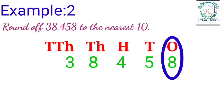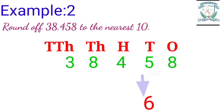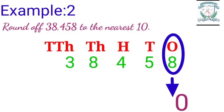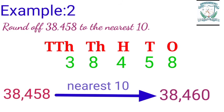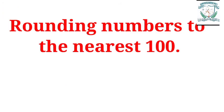If the digit in the ones place is five or more than five, then the number is rounded off to the next ten. Here 8 is greater than five, so the tens place will become 6 and the ones place will become zero. So when we round off 38,458 to the nearest ten, we get 38,460.